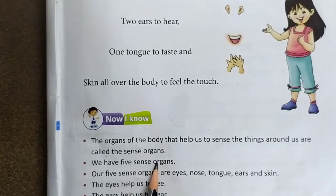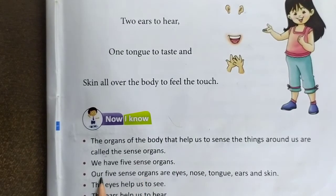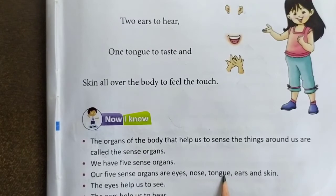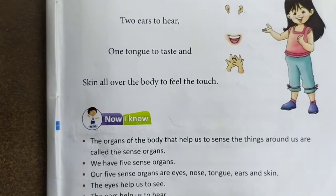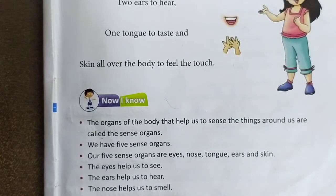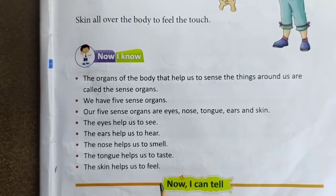We have five sense organs. Hamaari paanch indriya hain. Our five sense organs are: eyes (aankh), nose (naak), tongue (jeeb), ears (kaan), and skin (twacha). The eyes help us to see. The ears help us to hear. The nose helps us to smell. The tongue helps us to taste. The skin helps us to feel.